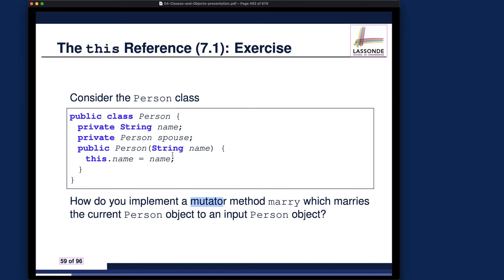The question is: how do you implement a mutator method to modify the spouse attribute? Specifically, a method called marry(), which will marry the current Person object (the context object) to an input Person object. For example, if you have two persons — say jim and elsa — you can say jim.marry(elsa), which marries the two persons together, given that both persons are currently single.